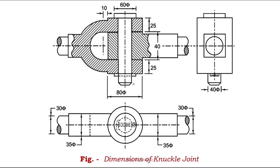We now draw the final figure with all finalized dimensions: rod diameter D = 30 mm, enlarged diameter D1 = 35 mm, eye thickness a = 25 mm, fork thickness b = 40 mm, pin outer diameter D0 = 80 mm, and D1 (fork outer) = 60 mm. I hope you understood the problem. Thank you, see you in the next video.